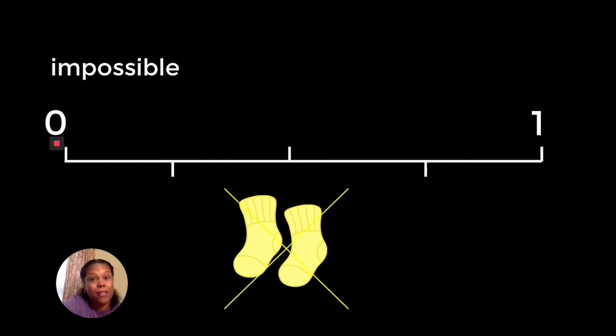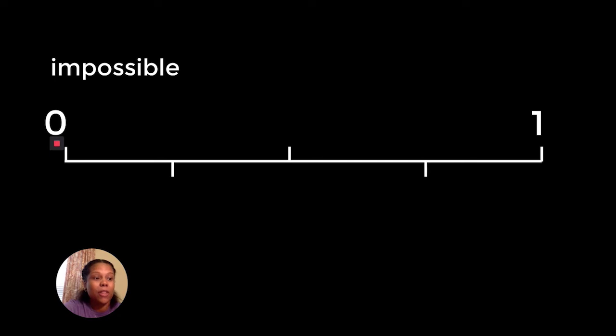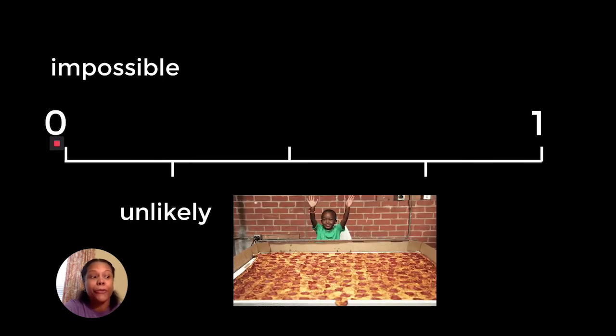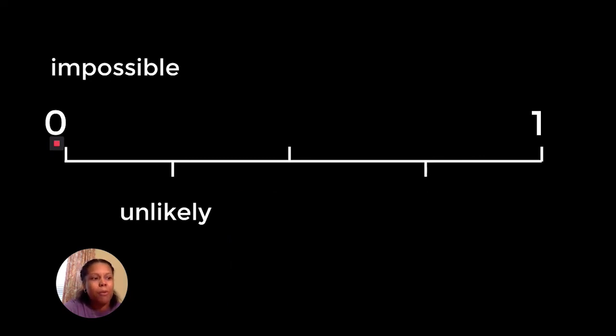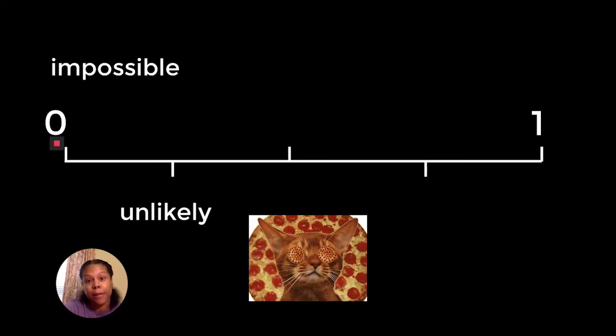Next on this number line, an event that could happen but does not have a good chance of happening is what we call unlikely. It is unlikely that you will eat pizza every day for a whole month, but not impossible. It could happen, but the chances are low, and I'm sure after five days you'd be ready to eat something else.